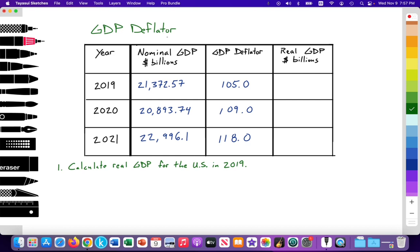GDP deflator is part of Macroeconomics, and there'll be a link to another video that explains this equation in more detail. Here we have a table you could get on an exam, with years in the left column — 2019, 2020, 2021 — and this is data for the United States. In the next column we have nominal GDP in billions of dollars. Nominal GDP tracks production of output at prices at which they're sold, so both prices and output are changing. The values are $21,372.57 billion in 2019, $20,893.74 billion in 2020, and $22,996.1 billion in 2021.